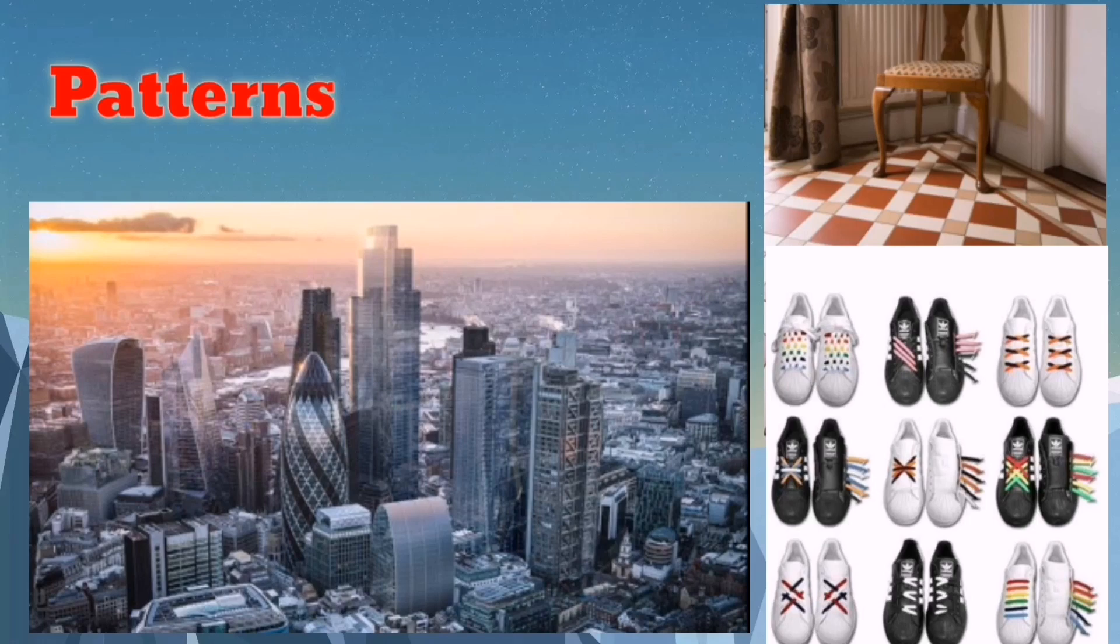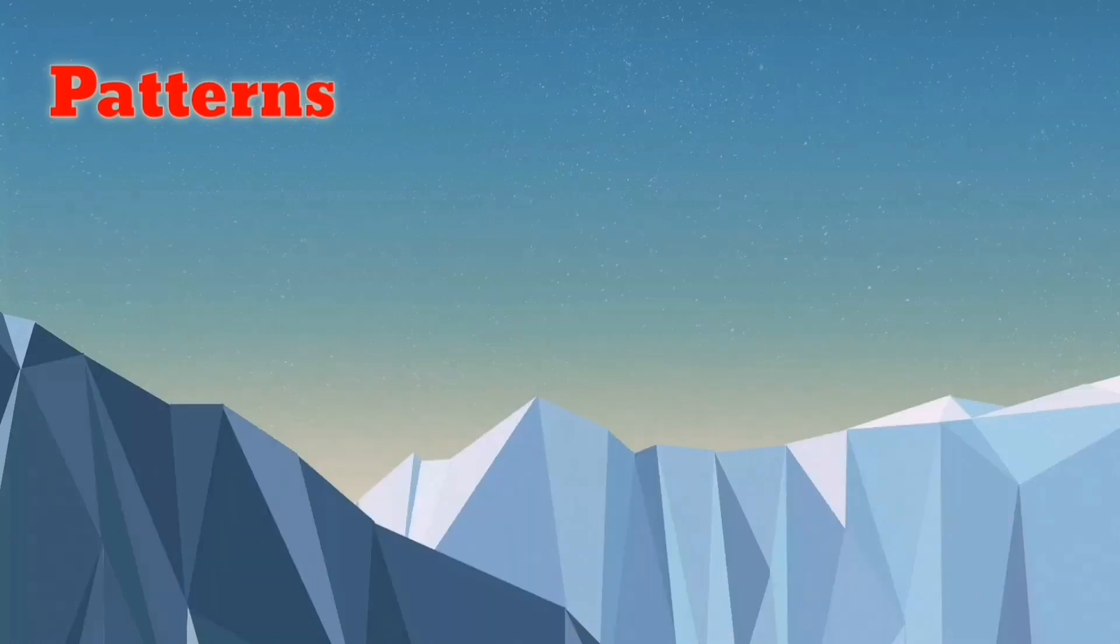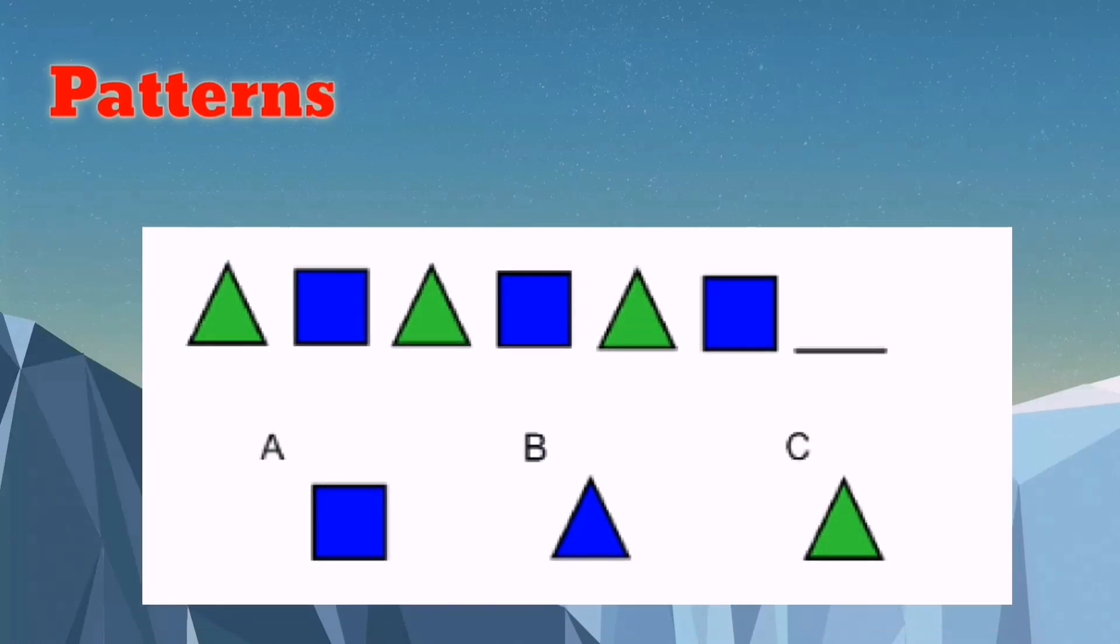Let's take a look at this pattern. What do you think will be the next shape in the sequence? As you can see, first we have green triangle, blue square, green triangle, blue square, green triangle, and blue square. What is the next shape in this pattern? If your answer is C, then you're absolutely correct.